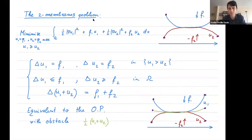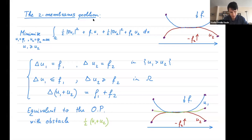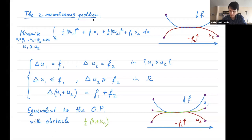Another version is the two membranes problem, where instead of a rigid obstacle we have two elastic membranes. The blue membrane is pushed down and the red membrane is pushed up, and we expect a contact region between them and a separated region. Mathematically, we minimize the sum of the energies of the two membranes subject to u1 greater than or equal to u2, with both fixed on the boundary. It turns out this is actually equivalent to the obstacle problem with a rigid obstacle.